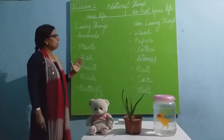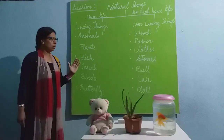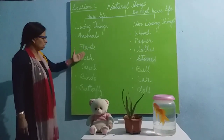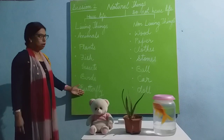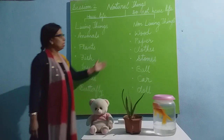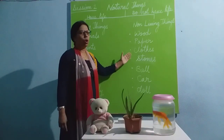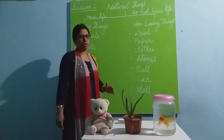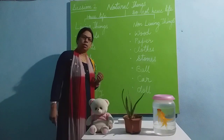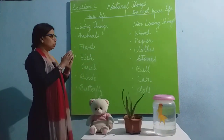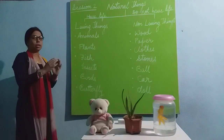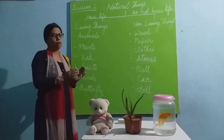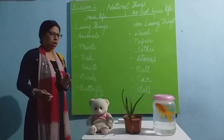Now there is a confusion — why do we say that these things have life whereas these things do not? How can we find out? What is this life? How can we differentiate or categorize which things have life and which do not?